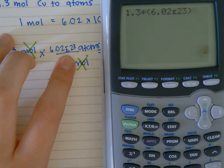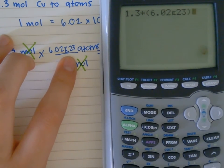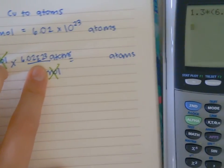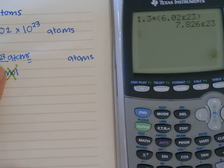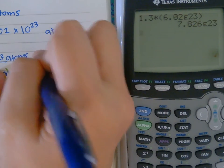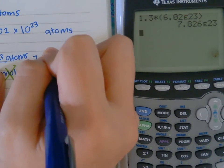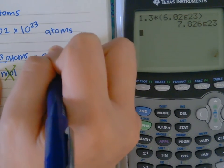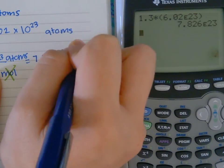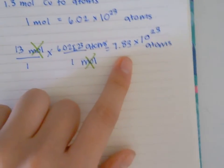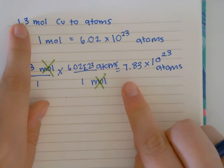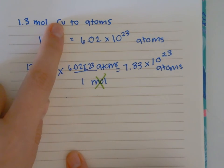So my answer is equal to 7.83 times 10 to the 23rd atoms. So within 1.3 moles of copper I have 7.83 times 10 to the 23rd atoms.